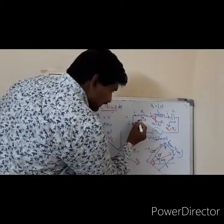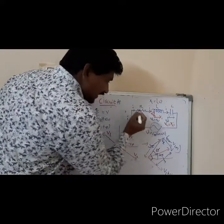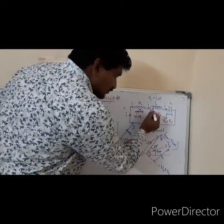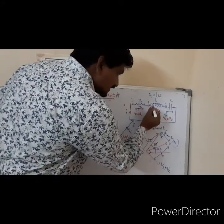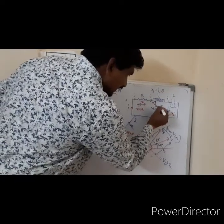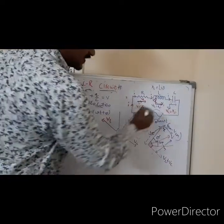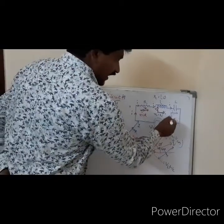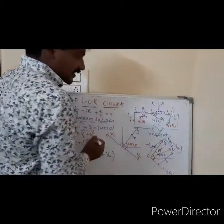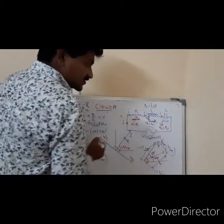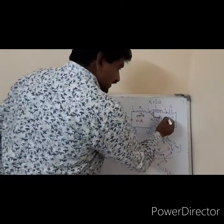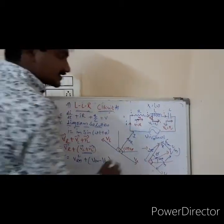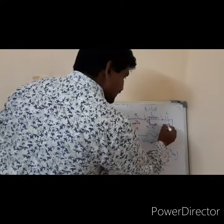The current vector and voltage vector are drawn in the same direction for resistance. Coming to the inductor, the source is leading, the current is behind the source with 90 degrees — it is showing the phase difference. And coming to the capacitor, when you have applied the AC source, current is leading, whereas source is behind the current with 90 degrees phase.